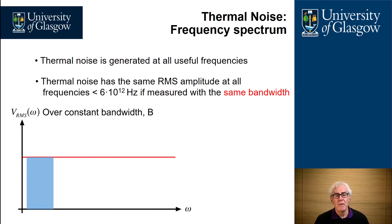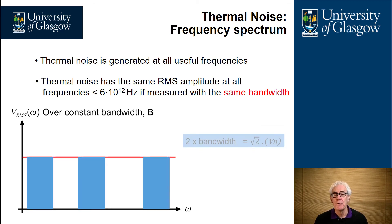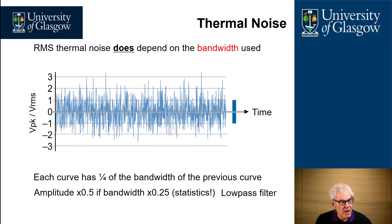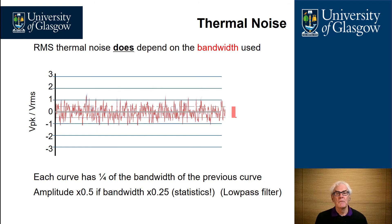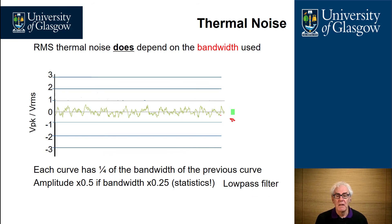If you increase the bandwidth — in this example we've doubled it to two times — you will get an increase in noise of root two times the noise from the initial measurement. For bandwidth one, here is the RMS value. If we make the bandwidth four times smaller, the RMS value goes down by a half because of the statistics. If we make it even smaller, the RMS value drops yet again. Effectively, we've created a low-pass filter.